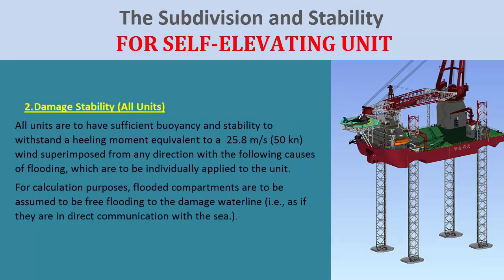Two: damage stability — all units are to have sufficient buoyancy and stability to withstand the heeling moment equivalent to a 25.8 meters per second (50 knots) wind superimposed from any direction, with the following causes of flooding, which are to be individually applied to the unit for calculation purposes.